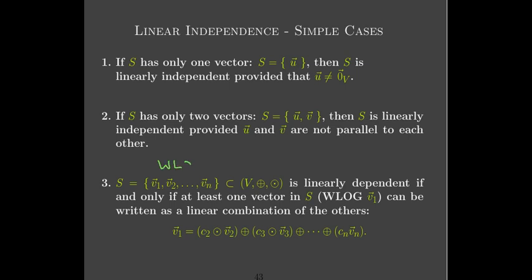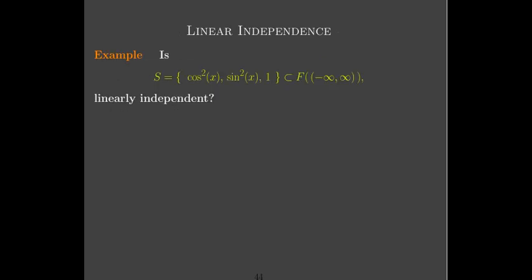I use the abbreviation WLOG, which stands for 'without loss of generality.' It means that although we said we'd write V₁ as a linear combination of the rest, we could have chosen any vector in the set—V₄, V_N, or any other. The result would be the same regardless of which one we pick, so we just choose V₁ for simplicity.